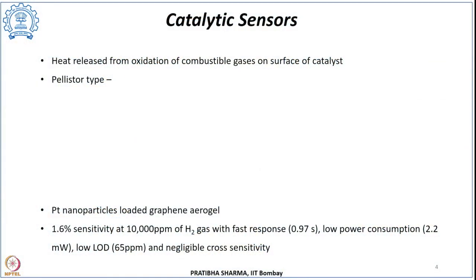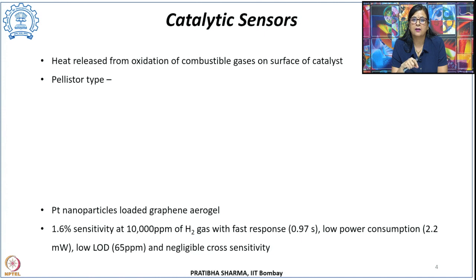Another type is catalytic sensors. These are based on the principle that heat is released due to oxidation of combustible gases on the surface of a catalyst, and that change in property can be used to measure hydrogen gas concentration. Hydrogen is a combustible gas that reacts exothermically with oxidizers, releasing energy of about 142 MJ/kg based on the higher heating value. This release of heat or change in temperature can be used to sense hydrogen gas concentration.